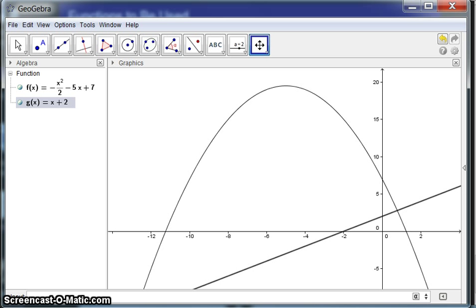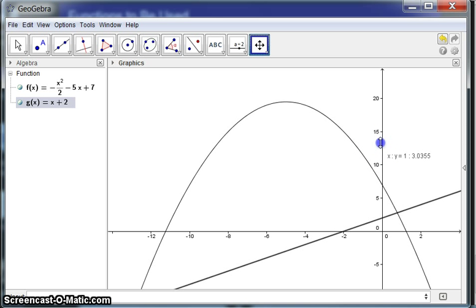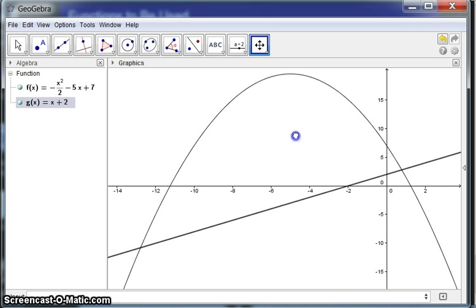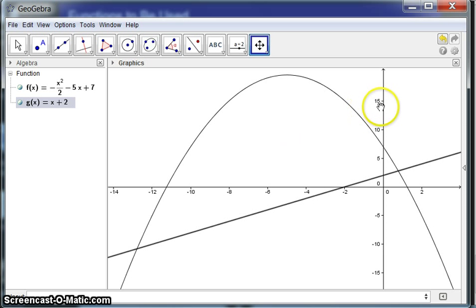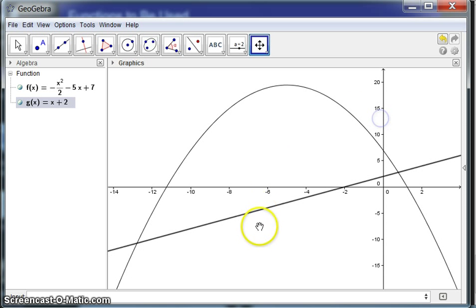In particular, it looks like we might want to readjust the y-axis. So I'll go up here and get that move thing and adjust that. I probably just want to move it up a little bit then. You can see how nicely you can kind of move this around. And now I have both points of intersection showing on the graph. And I can consider this to be a very nice graph of these two functions.